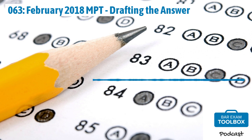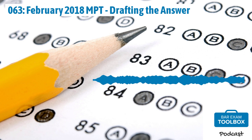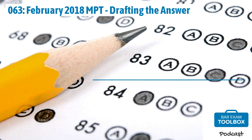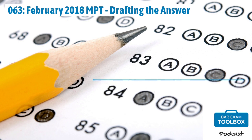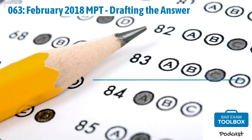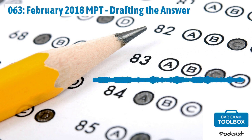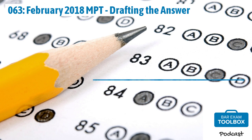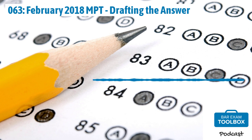This episode is a little bit different from our discussions on how to approach essays. Instead of covering the law you'll need to know and then how to apply it to the question, we've divided this MPT up into two podcasts. Today we're talking about how to approach drafting your answer for the February 2018 performance test. This particular performance test asks you to draft a memo. If you haven't listened to part one, you might want to go back and listen to that one. You have exactly 90 minutes to complete each performance test. We recommend splitting that time: 45 minutes working through the library and file, and then 45 minutes drafting the essay.